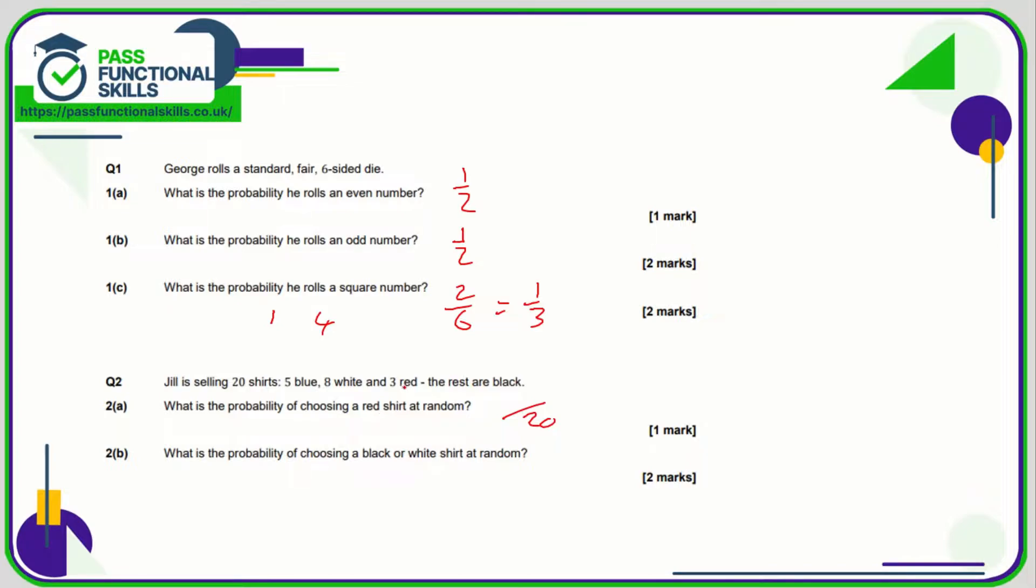of choosing red? Well there's three red, so that's three out of 20. Black or white? Well we know that there are eight whites. How many black are there? Well in total there's eight plus three which is 11, plus